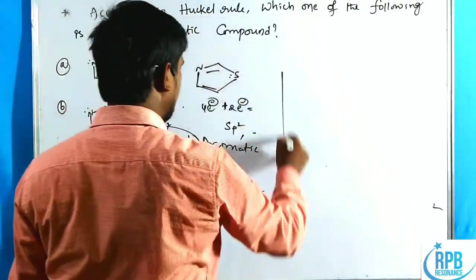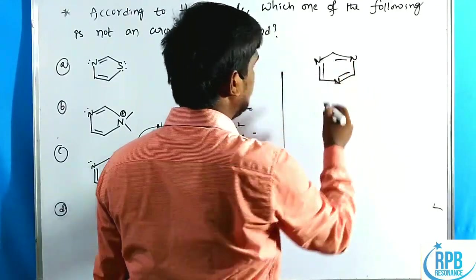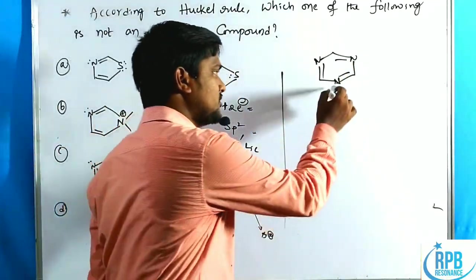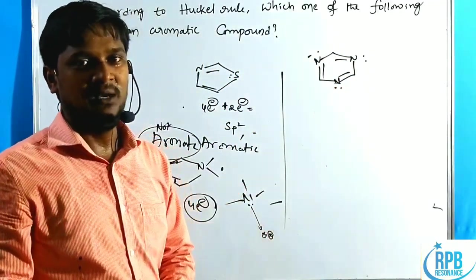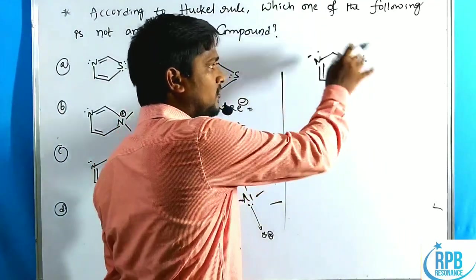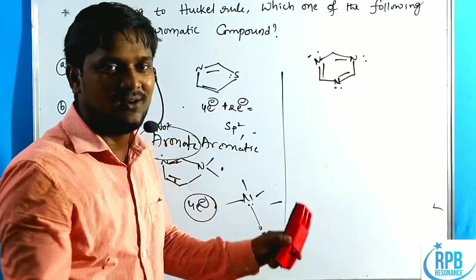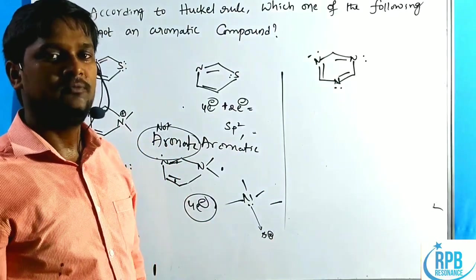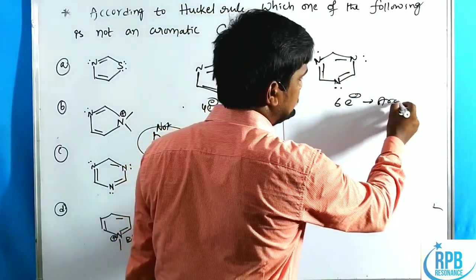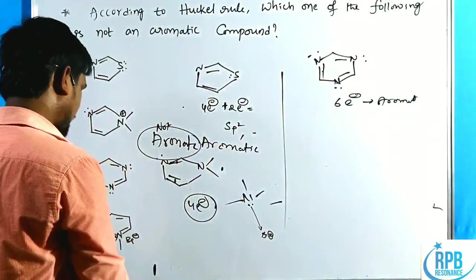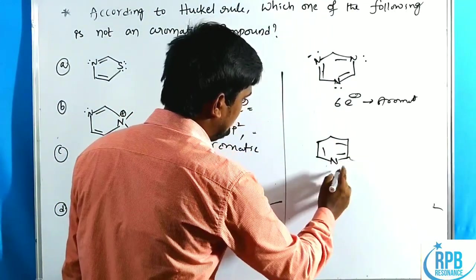The third compound has three nitrogen atoms. Each nitrogen atom is part of a double bond, so none of their lone pairs are counted in the Hückel rule. Therefore, only the three pi bonds contribute electrons: six electrons total. Six electrons satisfies 4n+2 (n=1), so this compound is aromatic.